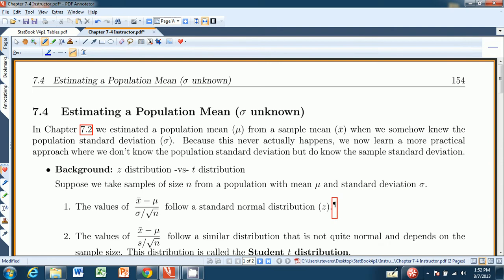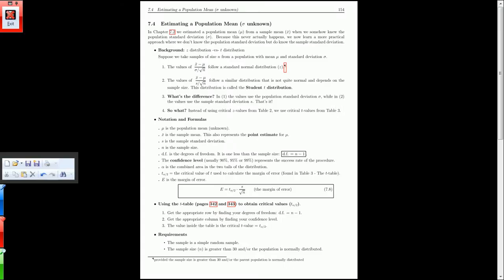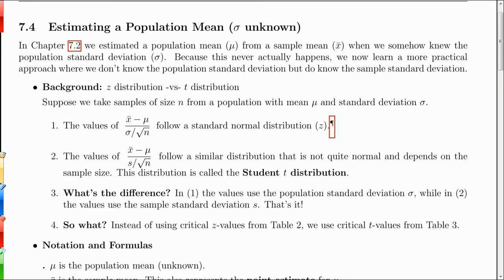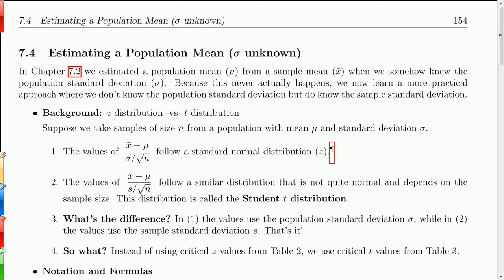Chapter 7.4, estimating a population mean. When we did this before in chapter 7.2, we actually knew the standard deviation. In this case, we do not know the population standard deviation, and that's going to alter our approach significantly. The procedure is actually identical, but we use a different distribution.